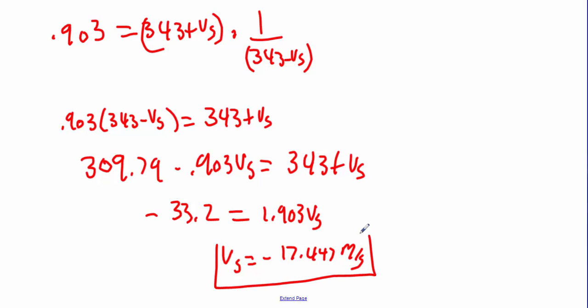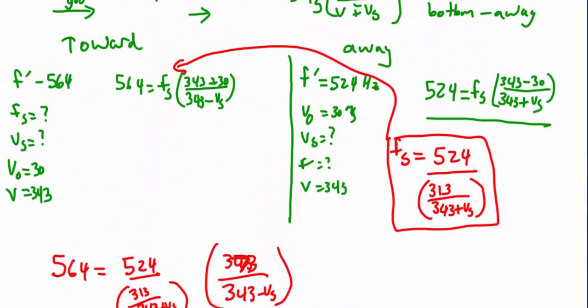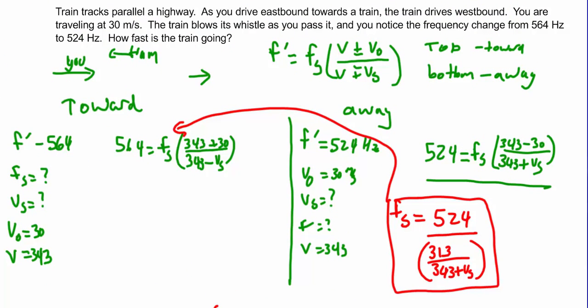Now why negative 17? Well, because all the way at the beginning, essentially we had this moving in the opposite direction of our 30 meters per second. So that tells me the velocity of the train is 17.45 meters per second, and it is traveling in a westward or negative direction. So we're good with that.